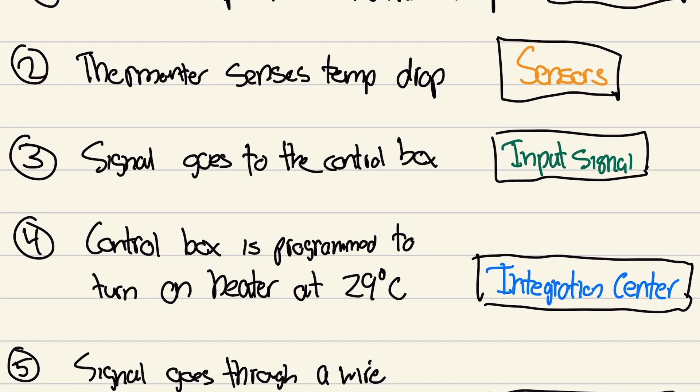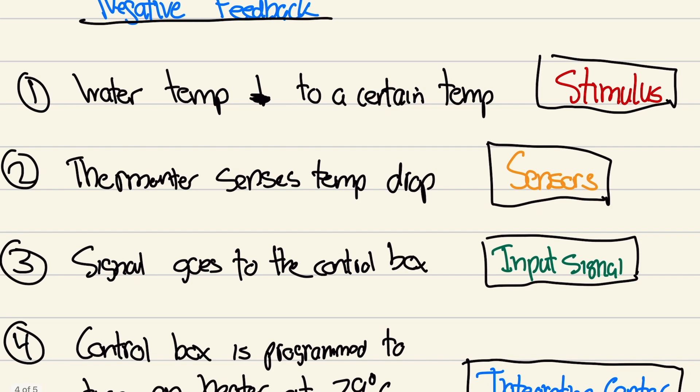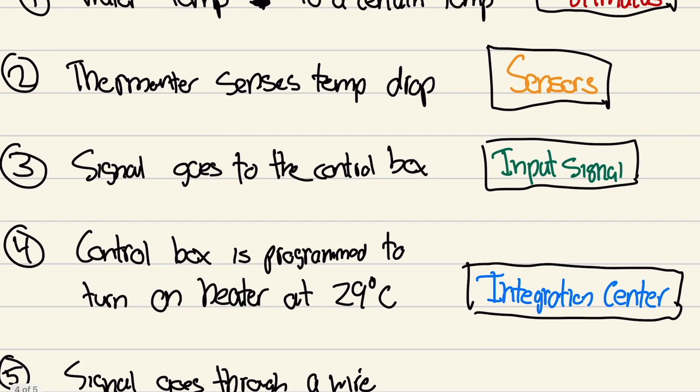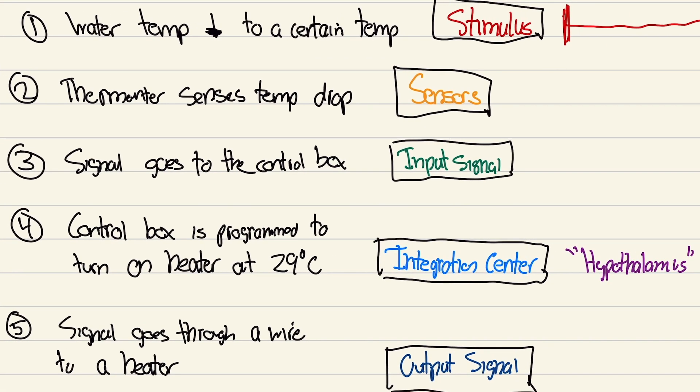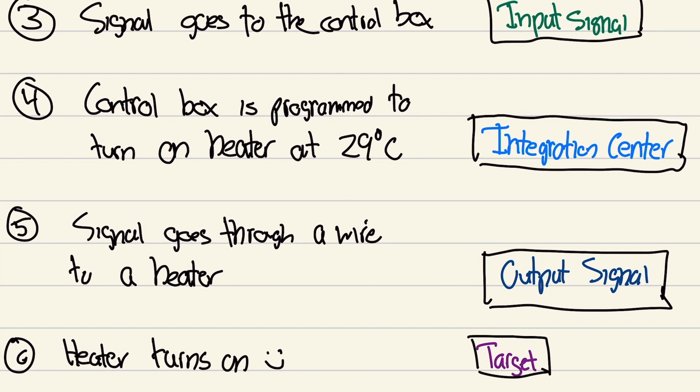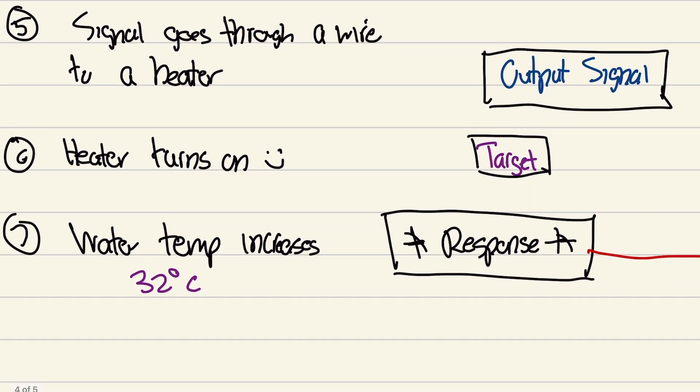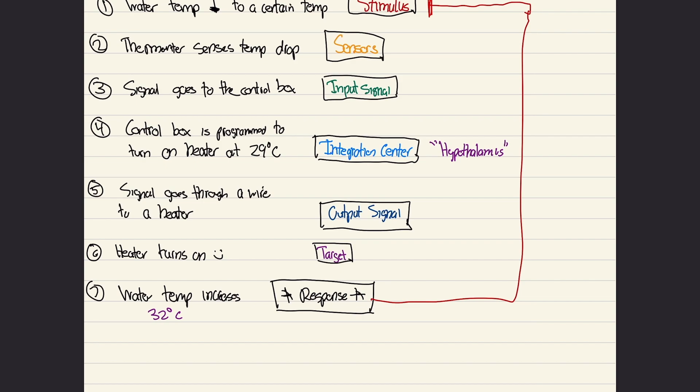Now if you're clever enough, you would realize—I kind of made that sound mean, you're all clever—but I mentioned the thermometer was like our thermoreceptors. The wires, our signals, are like our neurons in our body. Same thing. I just changed up this example to make it look like it's more real life. Control box, hypothalamus.